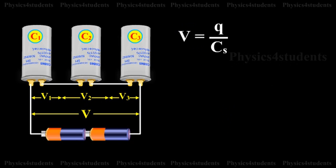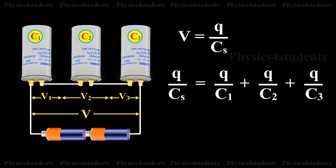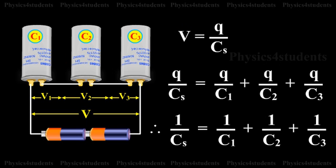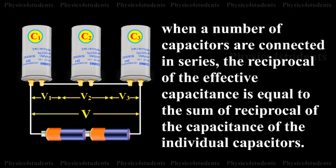That is, V equals Q by Cs, which equals Q by C1 plus Q by C2 plus Q by C3. Therefore, 1 by Cs equals 1 by C1 plus 1 by C2 plus 1 by C3. When a number of capacitors are connected in series, the reciprocal of the effective capacitance is equal to the sum of reciprocals of the capacitance of the individual capacitors.